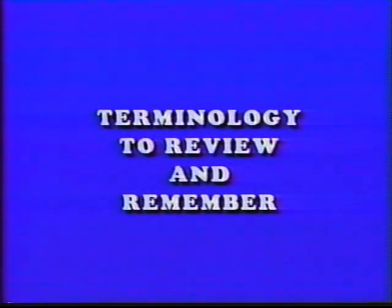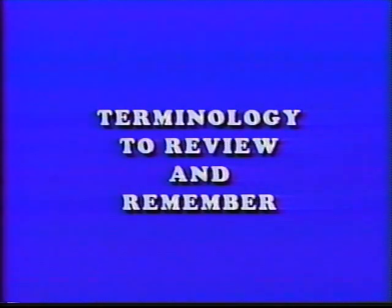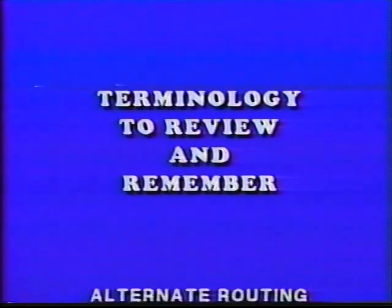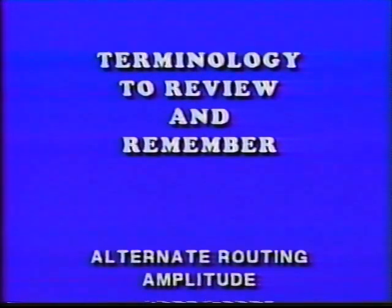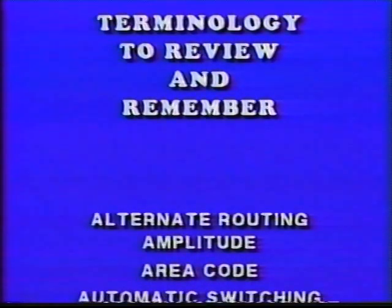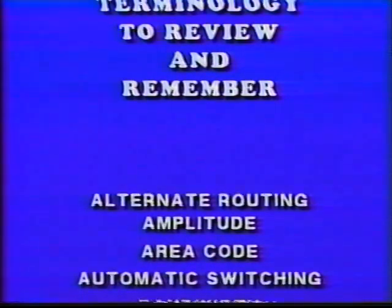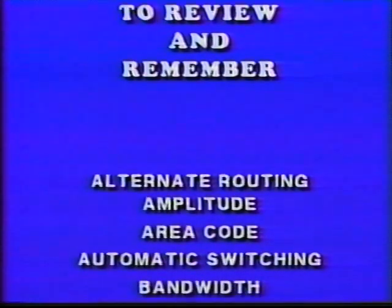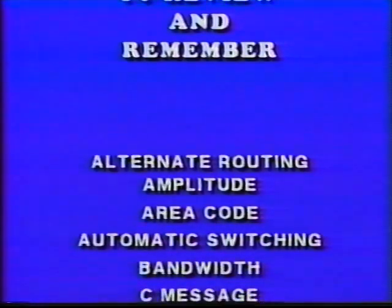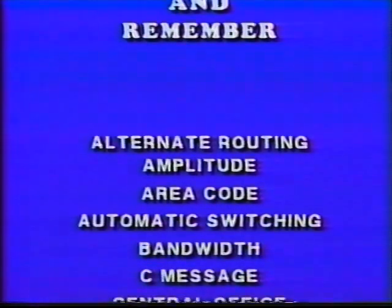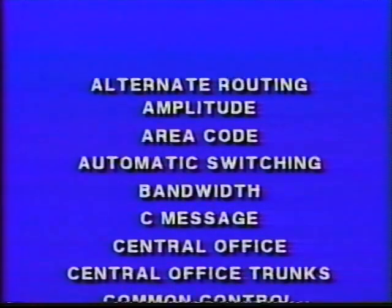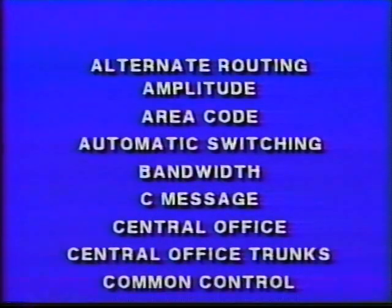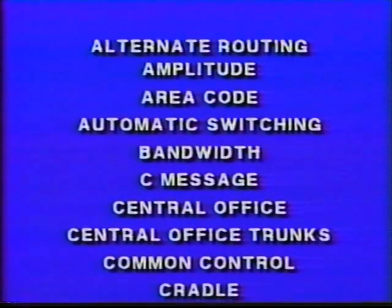Following are the terms to review for section two: alternate routing, amplitude, area code, automatic switching, bandwidth, C message, central office, central office trunks, common control, crossbar.